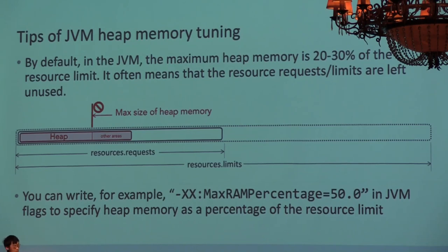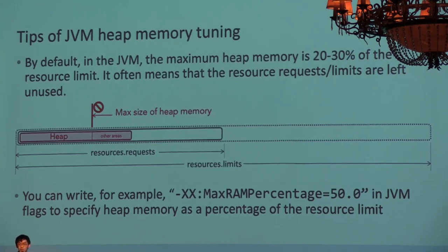By default, the JVM sets heap memory to about 20% to 30% of limits, so the amount written in resource requests and limits is often left over. The flag MaxRAMPercentage can be used to set the heap memory as a percentage of the resource limits.